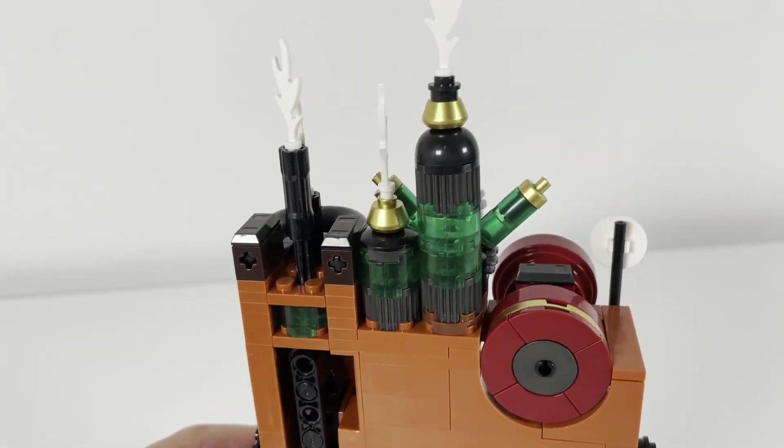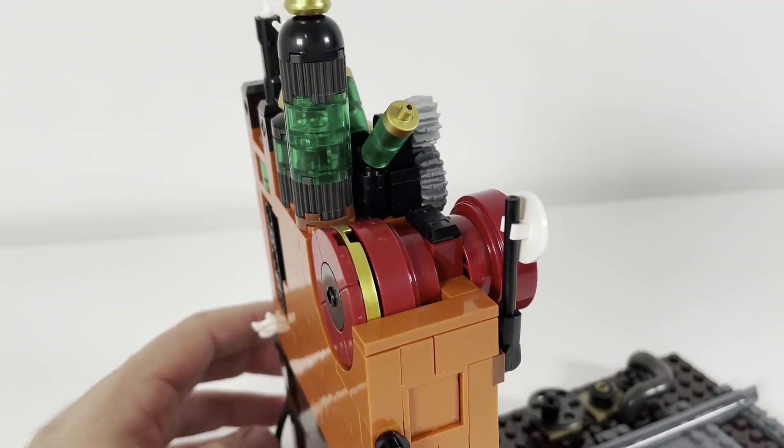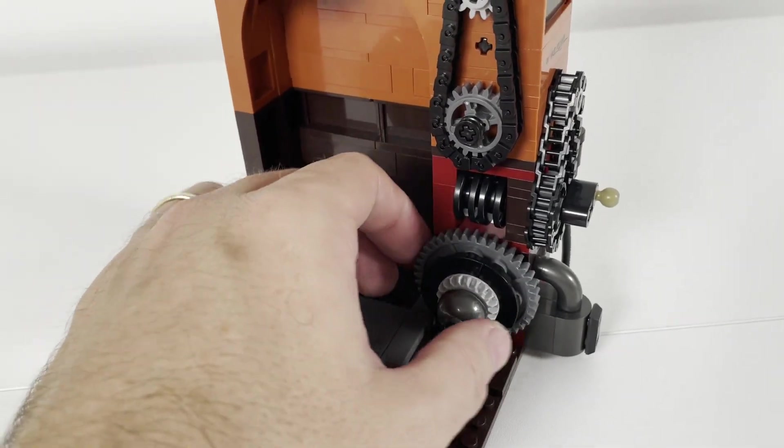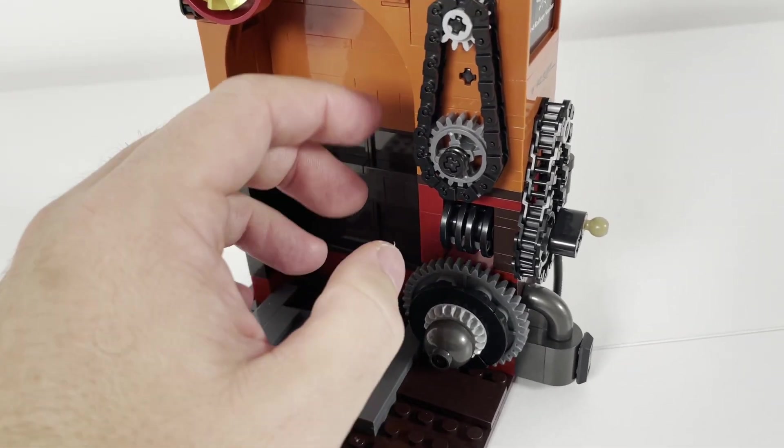The back looks almost the same and on the top we have some useless gears and a bunch of transparent parts. The big gear on the bottom has no function at all and is just for decoration purposes.